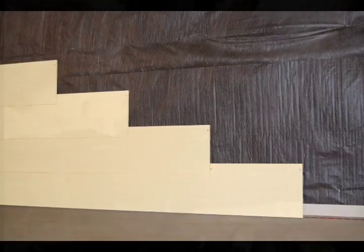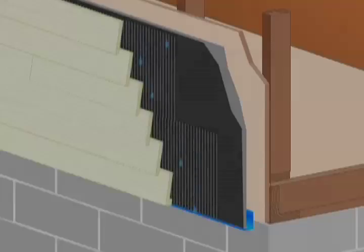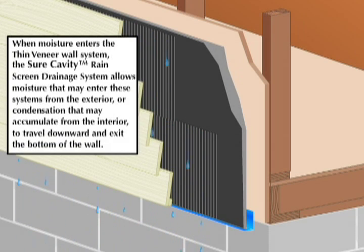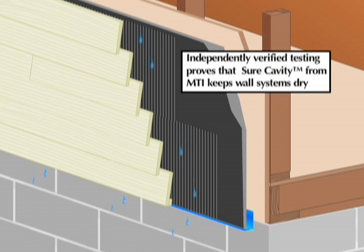We all know it's better to prepare than to repair. It is much more efficient to do something right the first time than have to fix a problem. Using Sure Cavity drainage plane from MTI will eliminate any potential for moisture problems in the exterior building envelope. No mold and no rot equal no callbacks and no possible litigation. Everyone will save time and money because the project was done right the first time. Remember, it's all about time. Getting the water out as fast as possible. Drainable is sustainable.